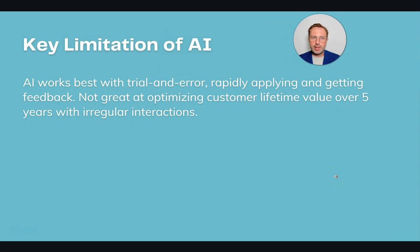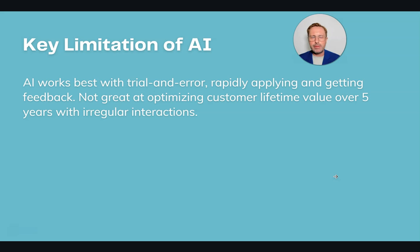One key limitation of AI: it works best through trial and error when it can rapidly apply and get empirical feedback. It won't be great at optimizing things like customer lifetime value over five years where interactions are irregular. As a marketer, we're often focused on the long term — maximizing market share and getting millions of new customers — rather than just optimizing people already in the sales funnel. For those big long-term efforts, AI may not be the best starting point because it relies on many empirical data points to learn and optimize.